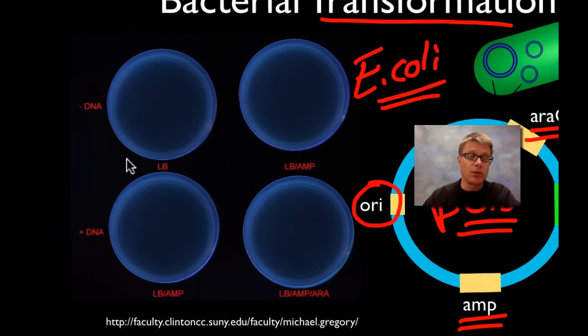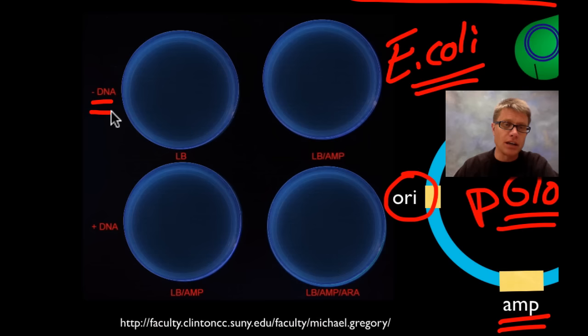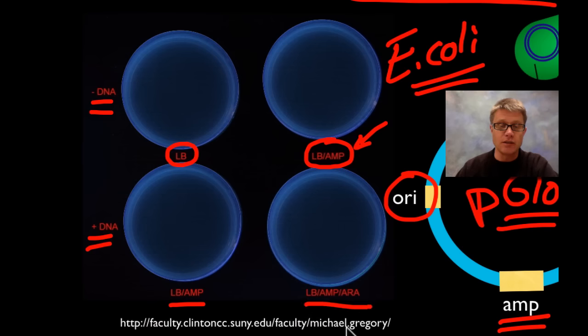Basically we're going to take some of the E. coli and we're not going to give it the plasmid, so it gets no DNA. We'll plate some of that on what's called L'Oreal broth, that's just basically food for bacteria. And then we'll plate some of it on L'Oreal broth with ampicillin. So since it has an antibiotic it's not going to be able to grow. We'll then add the plasmid to some of the bacteria. We'll grow some of them on L'Oreal broth and ampicillin. Some will be able to grow, those that pick up the plasmid. And then we're also going to have some of those with this trigger, this arabinose sugar as well.